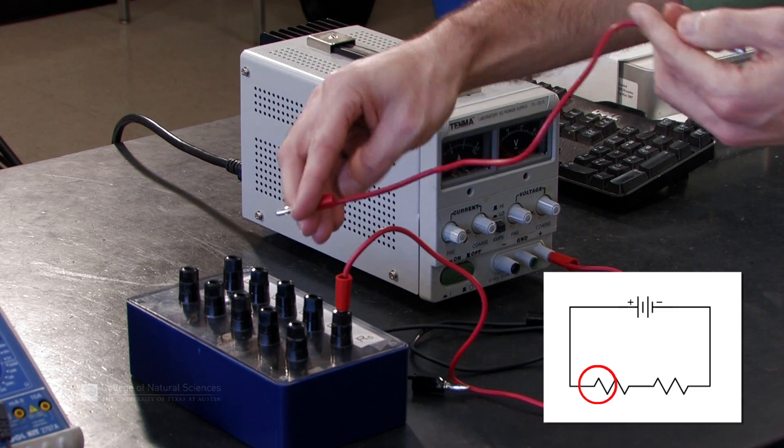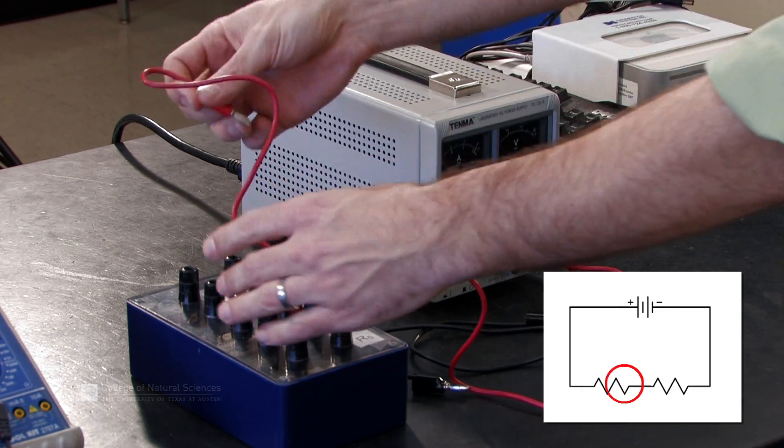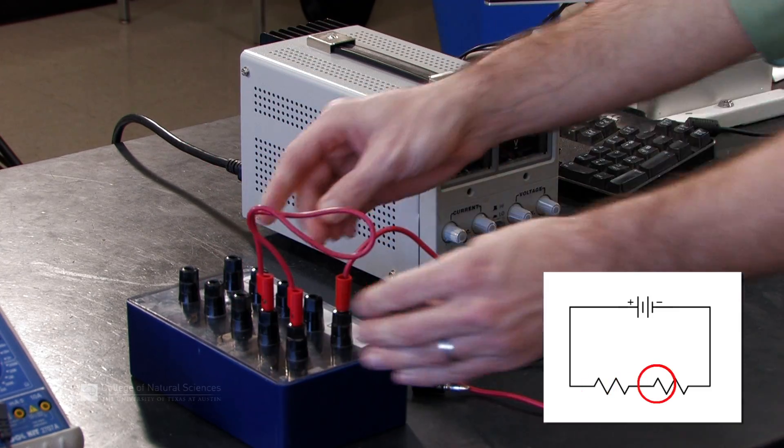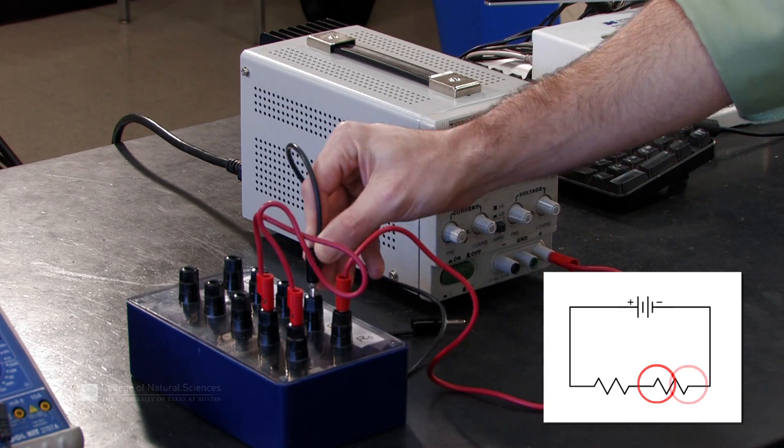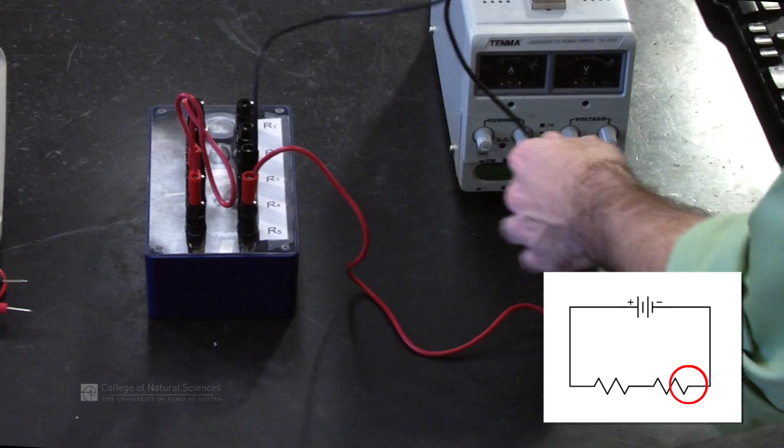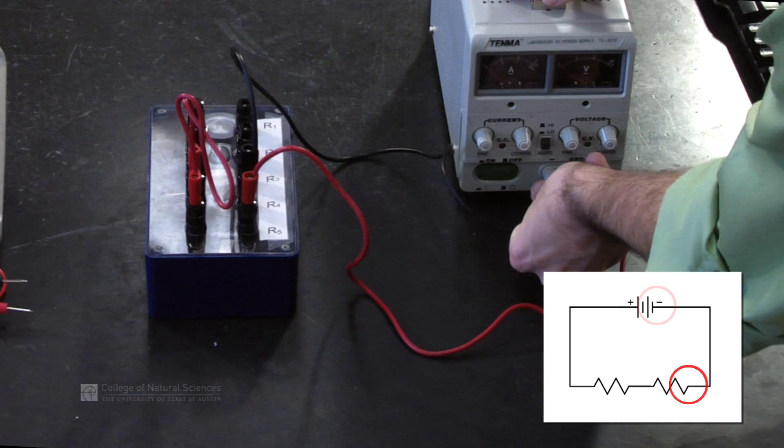As our circuit diagram shows, our first resistor is connected in series to a second resistor. And our second resistor is lastly connected back to the power supply in the negative terminal.